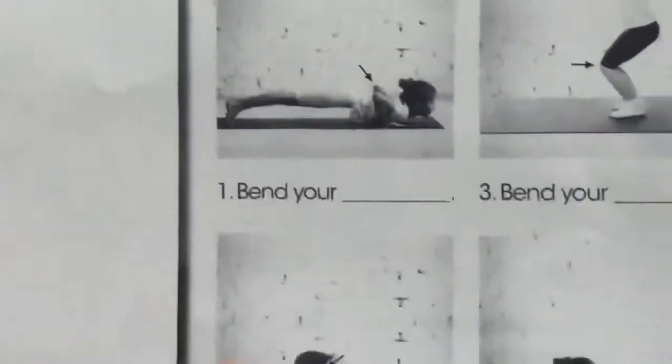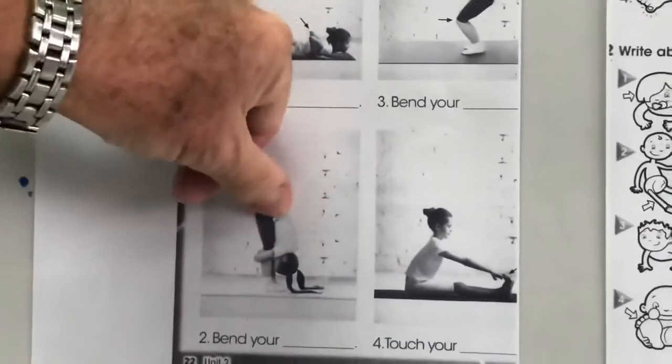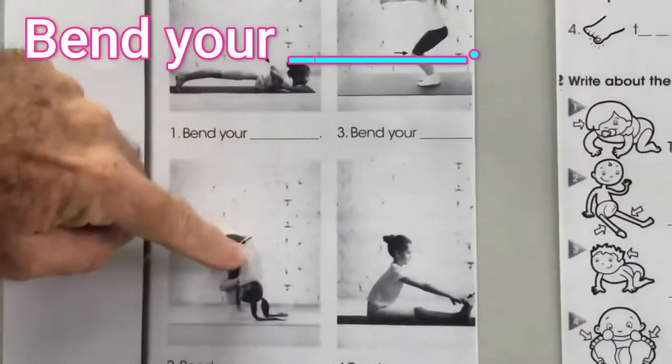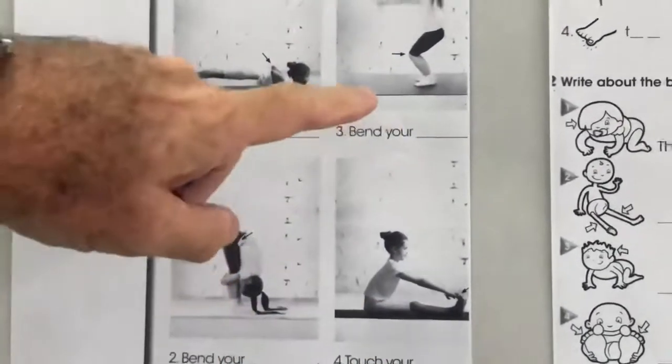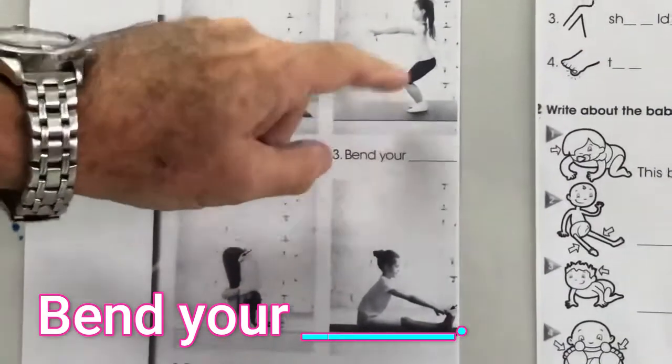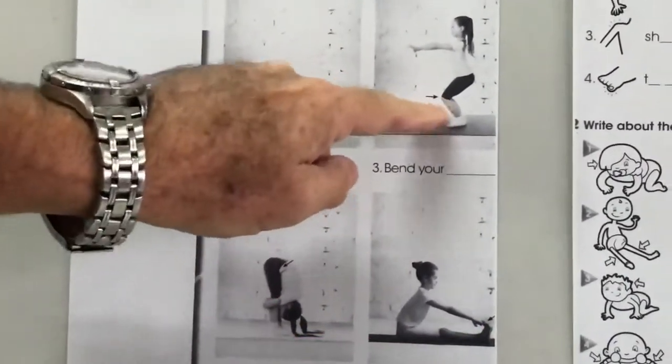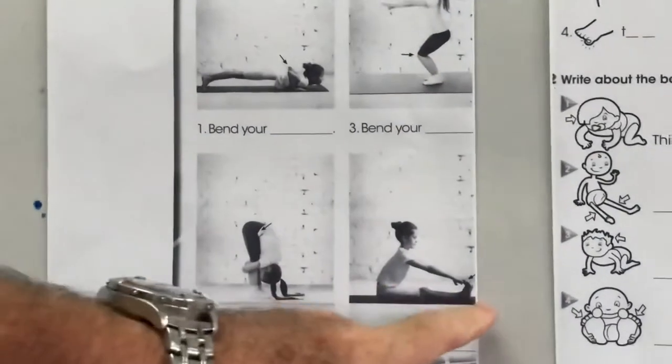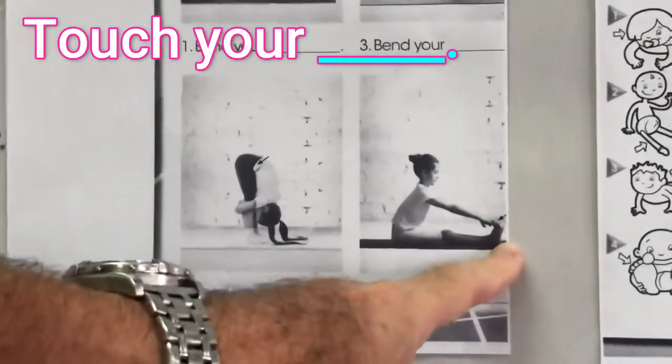This one here? Well, I can't do that. No way I can do that. What's this here? Bend your... what do we call this part here? This one? Bend your... or this one I can do. This one, easy. Bend your... and number four, touch your... what are they? Can you do that?